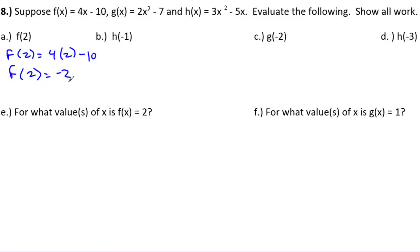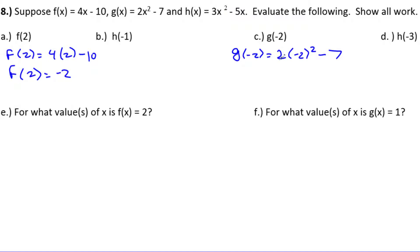For g of negative 2, go to the g function and plug in negative 2. So g of negative 2 equals 2 times negative 2 squared minus 7. Be careful with order of operations: negative 2 squared is 4, times 2 is 8, minus 7 is 1. So when you plug in negative 2, you get back 1.